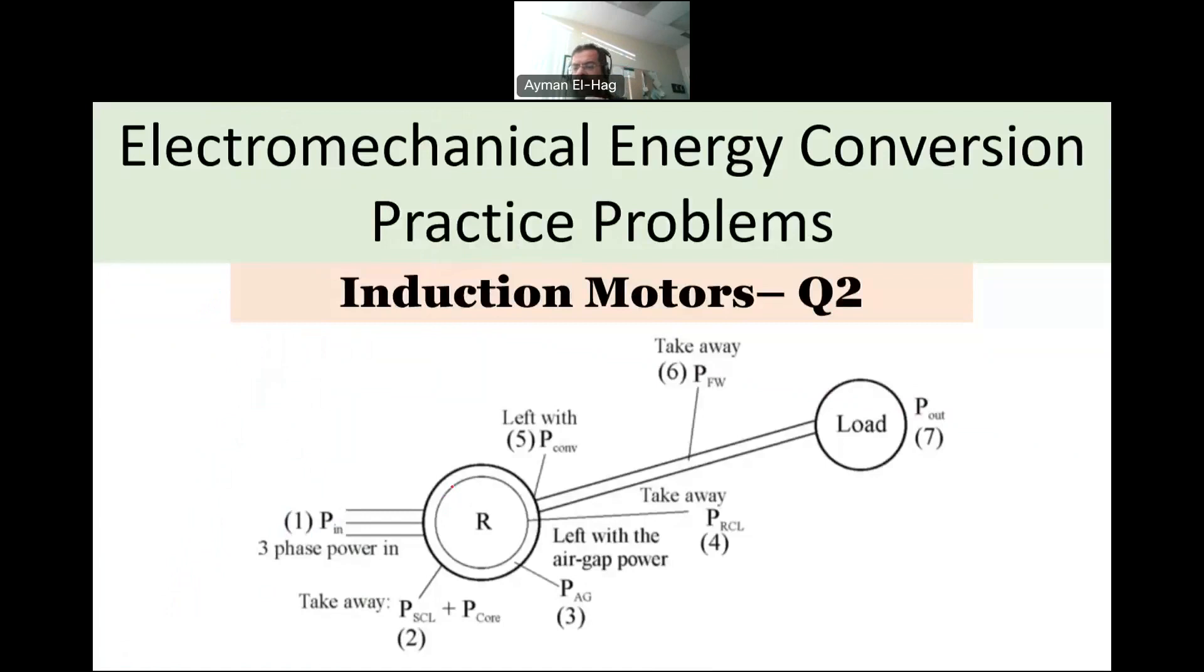So this diagram tried to illustrate the concept of power flow in the induction motor, starting from number one here, which is the PN, which is an electrical power, until we reach number seven, which is the P out. So basically, we start with PN, electrical power, three phase. Then we'll take away from that PSCL, which is the copper loss in the stator, plus PCOR, which is the core loss also in the stator. When we take these two together, we will reach to the air gap, the power in the air gap between the stator and the rotor, called PAG.